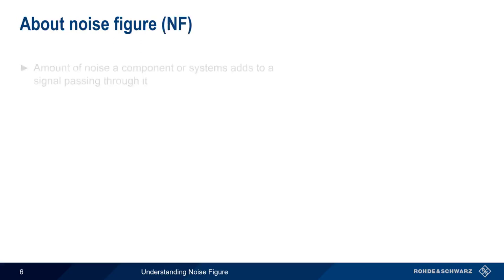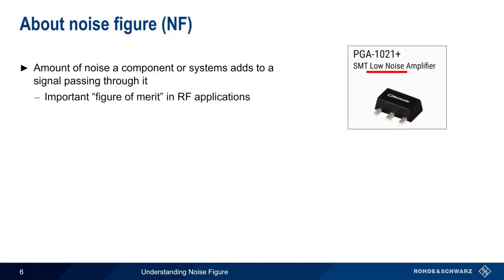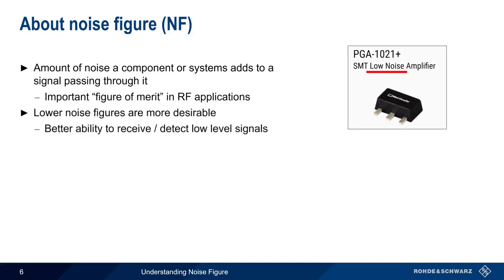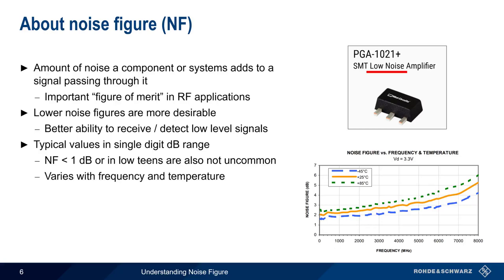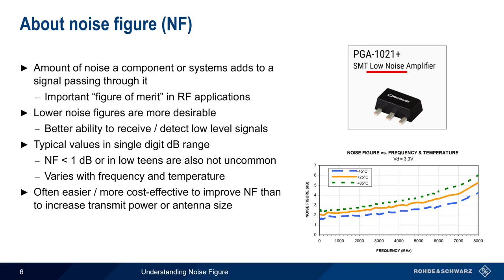Noise figure quantifies the amount of noise that a component or device adds to a signal passing through it. Noise figure is a very important figure of merit in RF applications. Lower noise figure values are more desirable, since low noise figure components or systems make it easier to receive and/or detect low-level signals. In most cases, typical noise figure values are in the range of single-digit decibel values, although noise figures of less than 1 dB or in the low teens of dB are also not uncommon. Noise figure does, however, vary as a function of both frequency and temperature. One reason why noise figure is so important is that improving noise figure is often easier or more cost-effective than trying to increase SNR in other ways, for example, by using higher transmit powers or larger antennas.